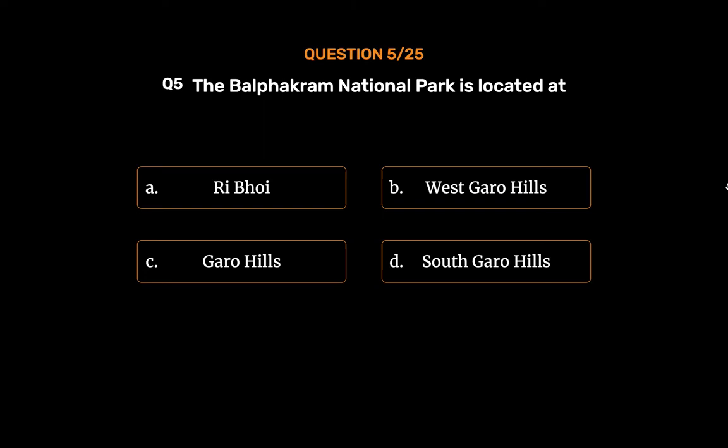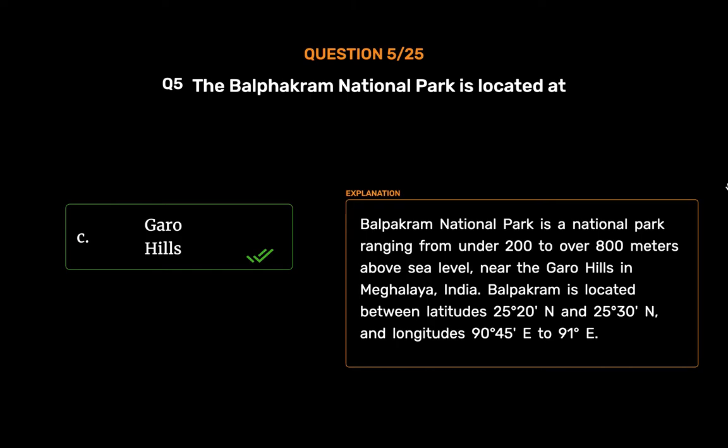The correct answer is Option C: Garo Hills. Balapakram National Park is a national park ranging from under 200 to over 800 meters above sea level, near the Garo Hills in Meghalaya, India. Balapakram is located between latitudes 25°20'N and 25°30'N, and longitudes 90°45'E to 91°E.